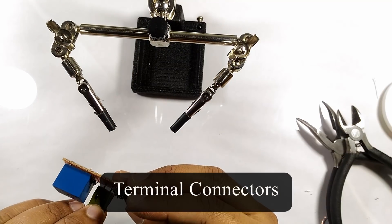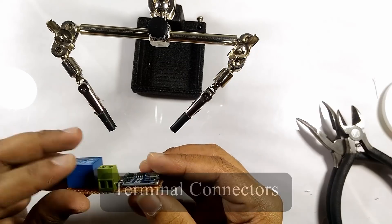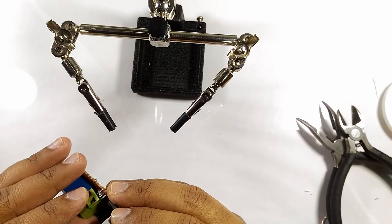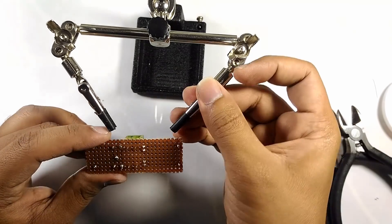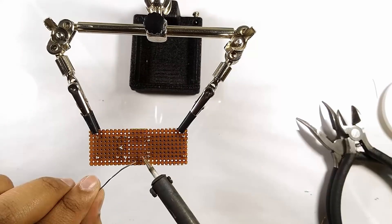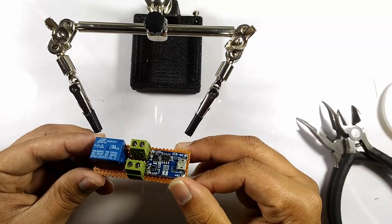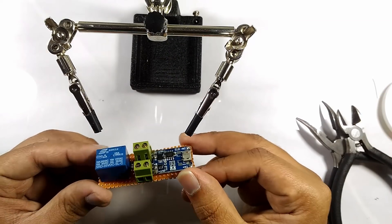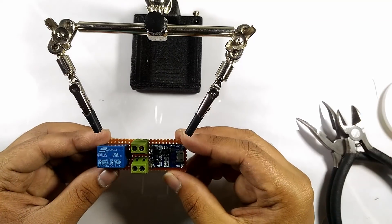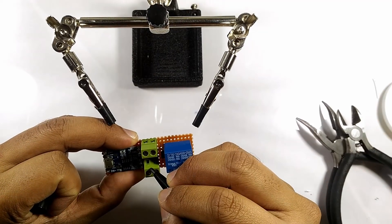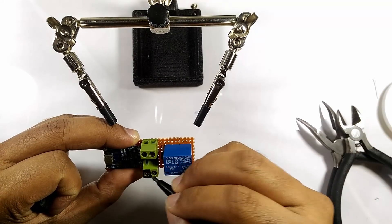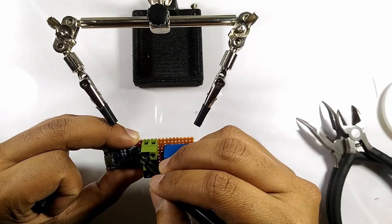I used terminal connectors to connect the battery and the buck converter to the dot board but you can just solder them directly if you wish. I used a permanent marker to mark in the polarity of the connection so that I do not connect the battery or the buck converter in the wrong way.